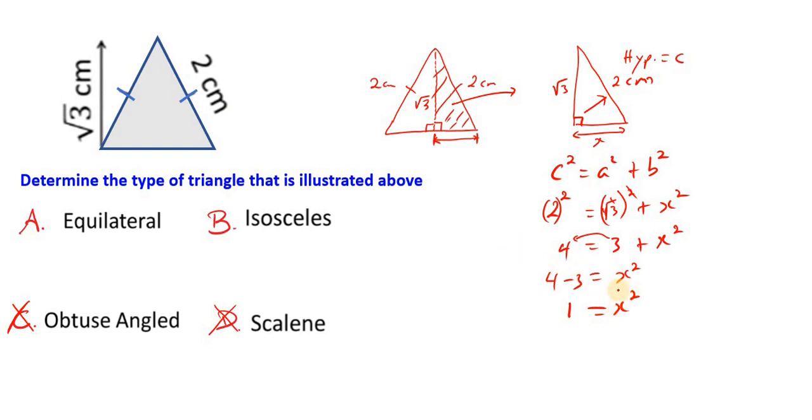Well, what quantity when squared gives us one? We have negative one when squared gives us one and positive one when squared gives us one. But since we're talking about measurement, x has to be a positive one. So it's the positive square root we're looking at. So x equals one.